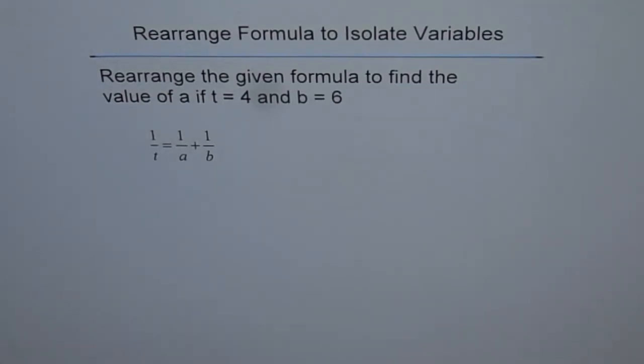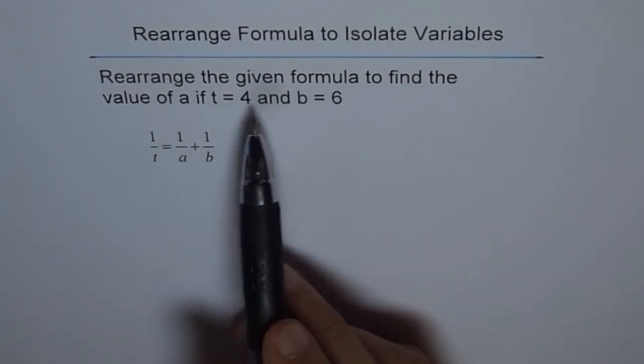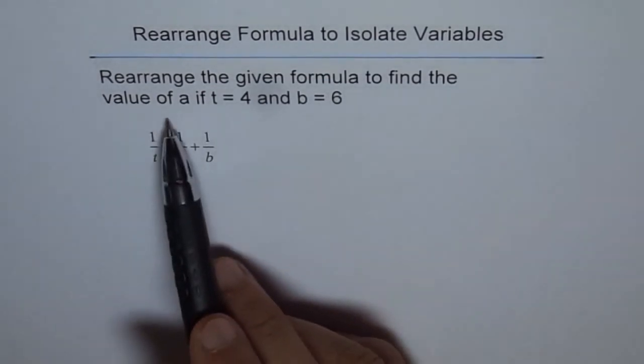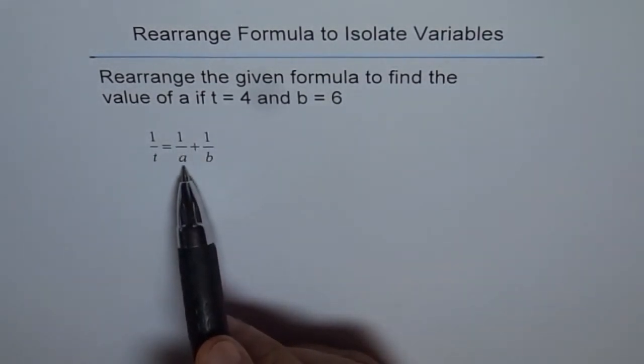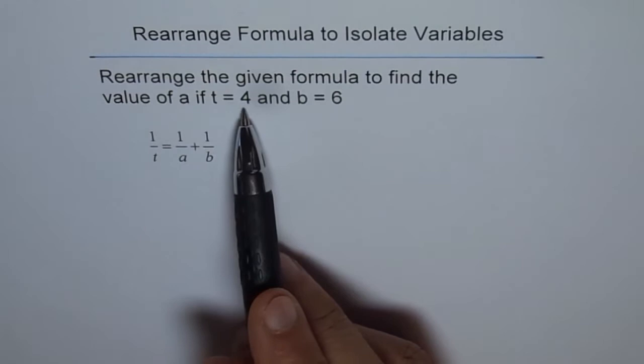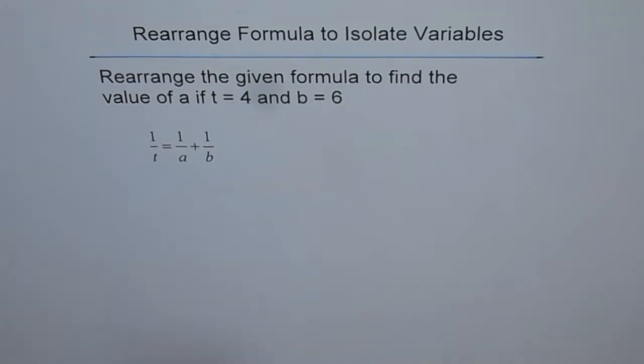Rearrange formula to isolate variables. Rearrange the given formula to find the value of A, this variable A, if T equals 4 and B equals 6.